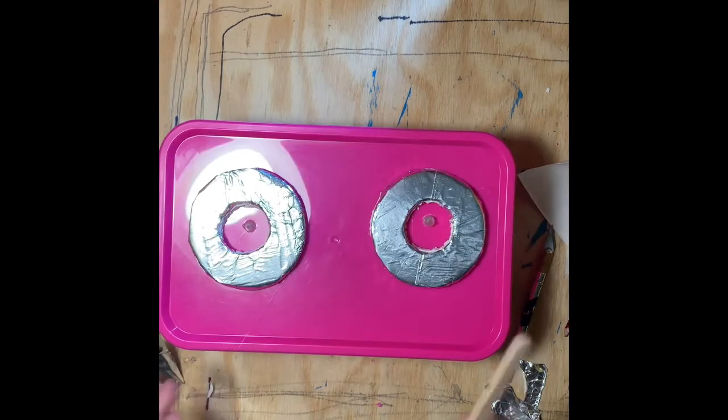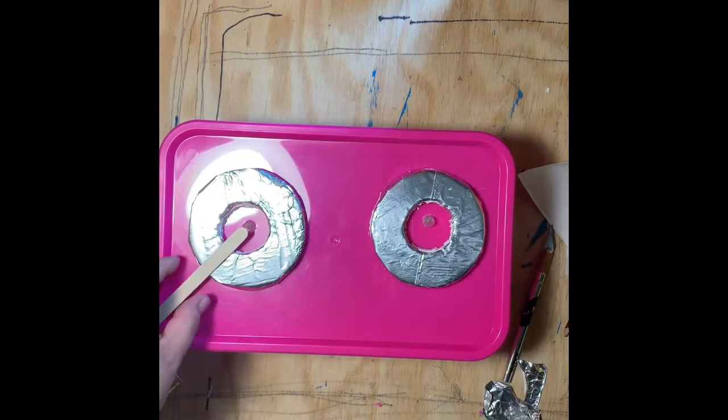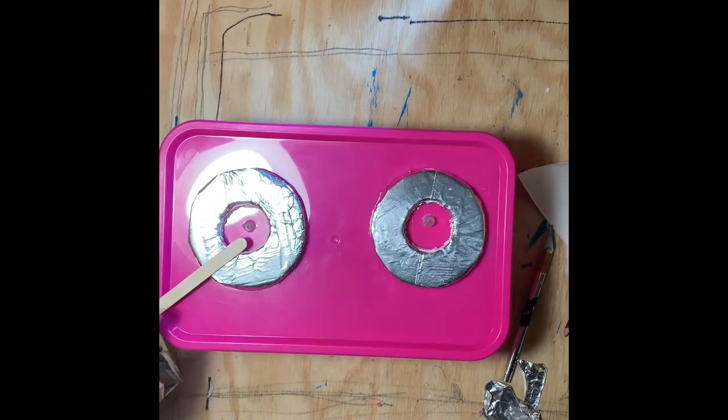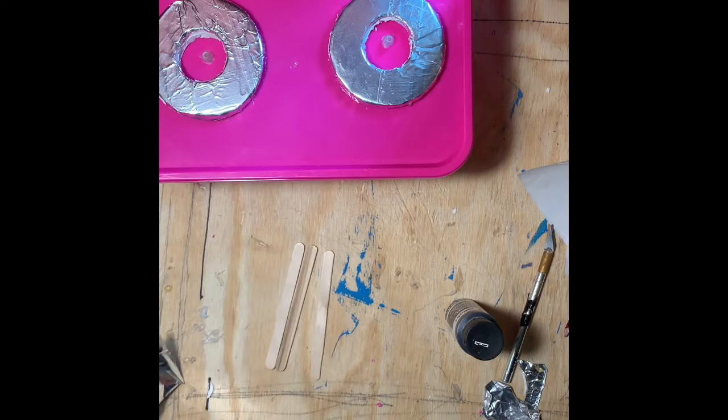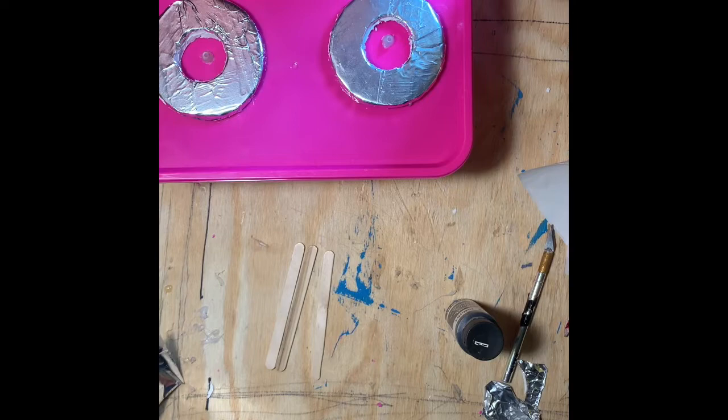I'm going to use four regular size popsicle sticks for the tops of the burners. I'm going to cut four pieces off for each burner, paint them black, and then glue them on top of the burner.